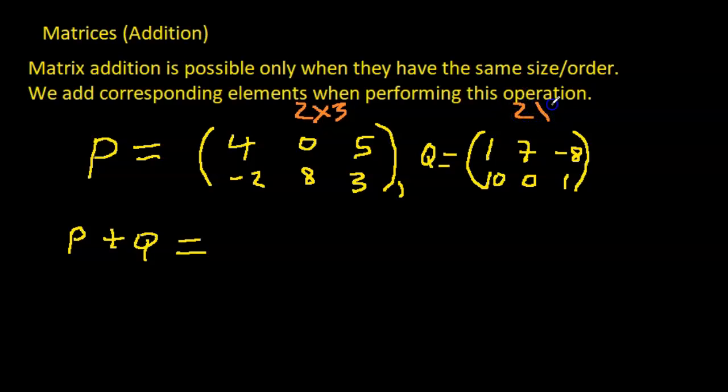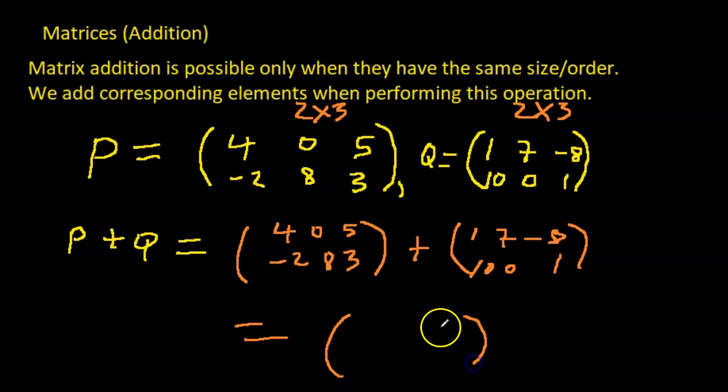And look at this, how many rows? Two rows and three columns, is also a 2 by 3. So yes, this matrix has the same size, or if you want to use the term order, so both are 2 by 3 matrices so we can add them. Alright, so P plus Q. So we have 4, 0, 5, -2, 8, 3, plus we have over here for Q: 1, 7, -8, 10, 0, 1.